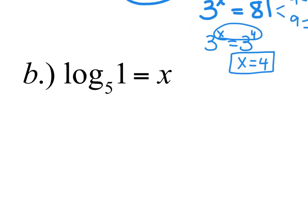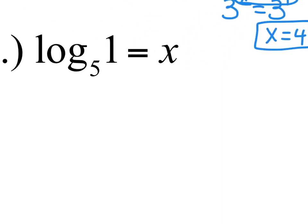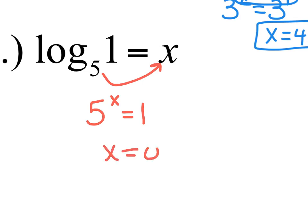Part B: log base 5 of 1 equals X. Convert to exponential notation: 5 to the X equals 1. What would I raise a base to to get it to become 1? Hopefully you remember — this is 0.